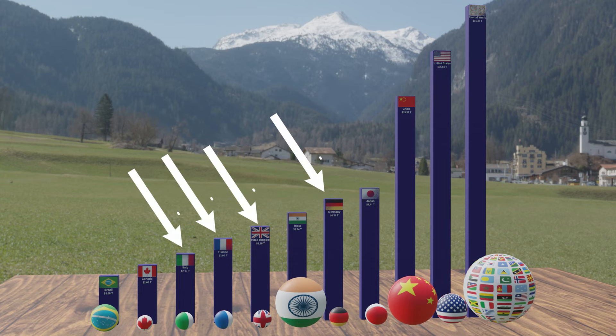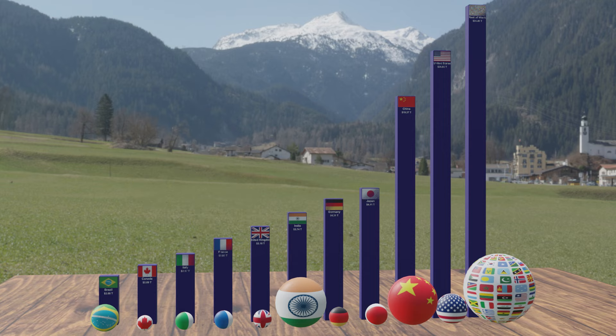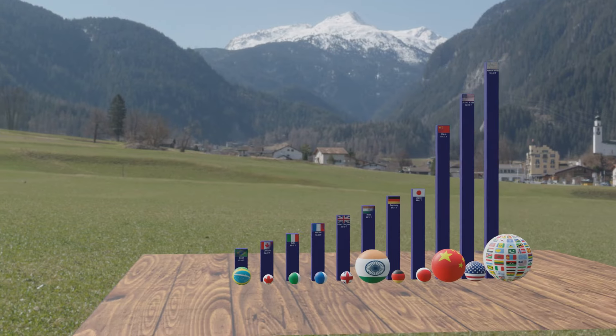Despite having smaller populations, countries like France, the United Kingdom, and Germany have higher GDPs compared to Brazil, which has a larger population. This highlights the economic strength of these European nations.